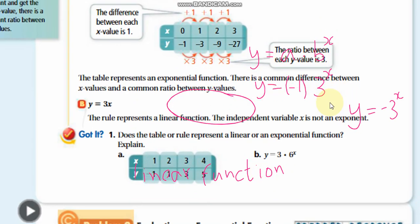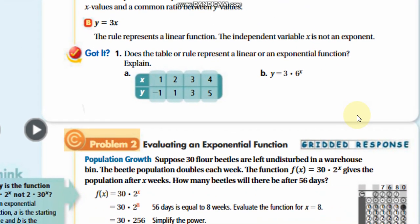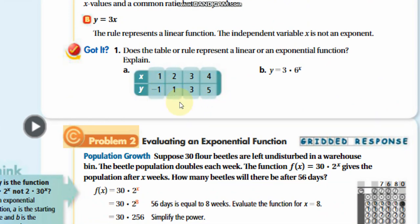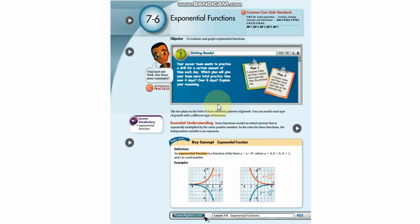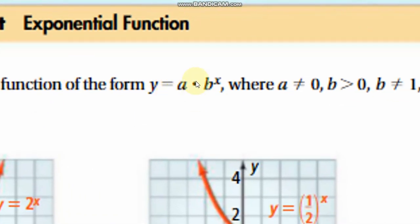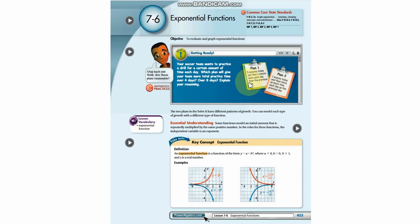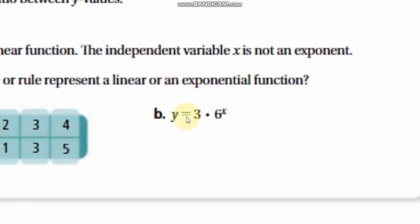Looking at the remaining tables: in one we see plus 2 and plus 2 — no common ratio, just addition — so that is a linear function. For another, we can identify a equals 3 and b equals 6, fitting the generic form y equals a times b to the power x from the last page, so that is an exponential function.